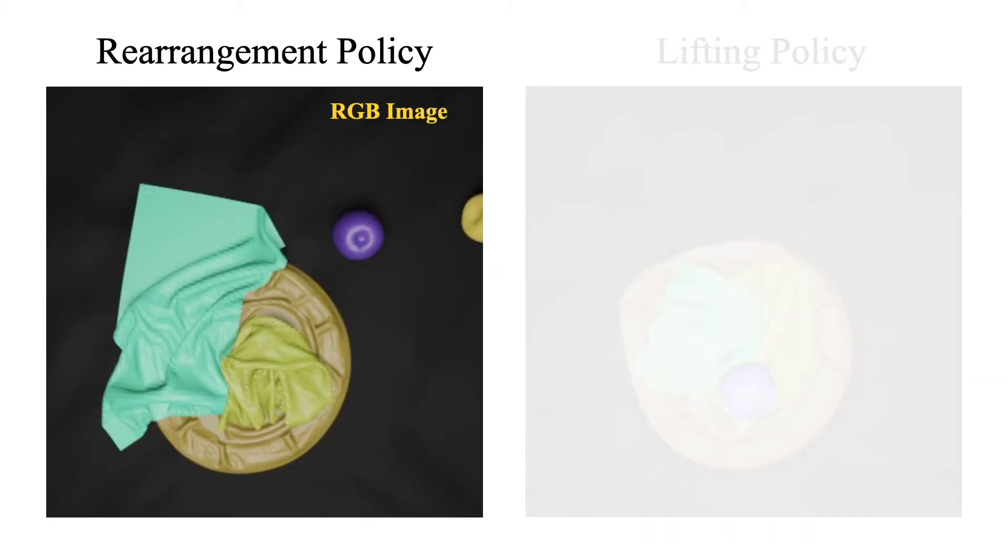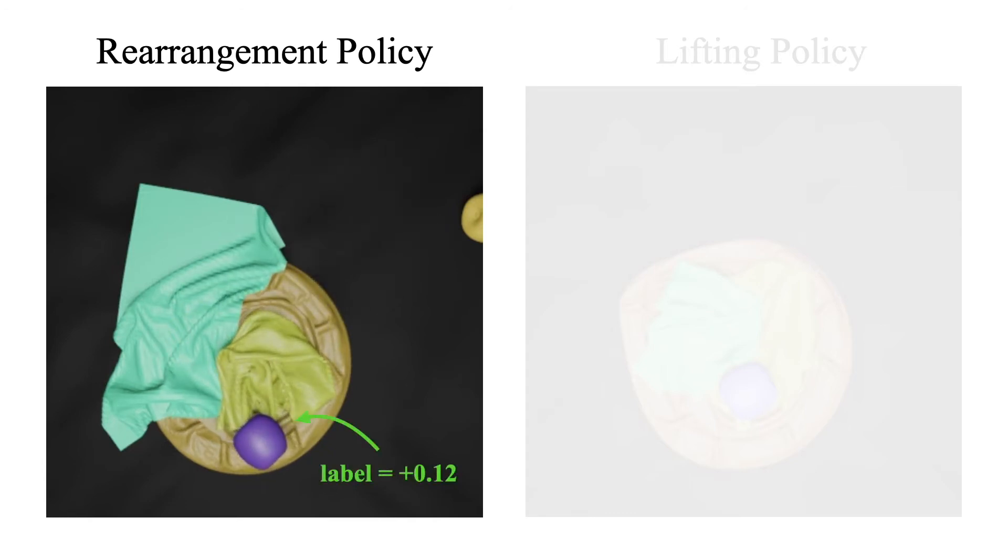The rearrangement policy is trained using spatial action maps and takes as input an RGB image and a filled bag opening mask and outputs the pick and place actions. The reward given to the policy is calculated using the change in the volume of objects outside the bag opening. For instance, here the apple is almost placed inside the bag opening and gets a reward of plus 0.12.